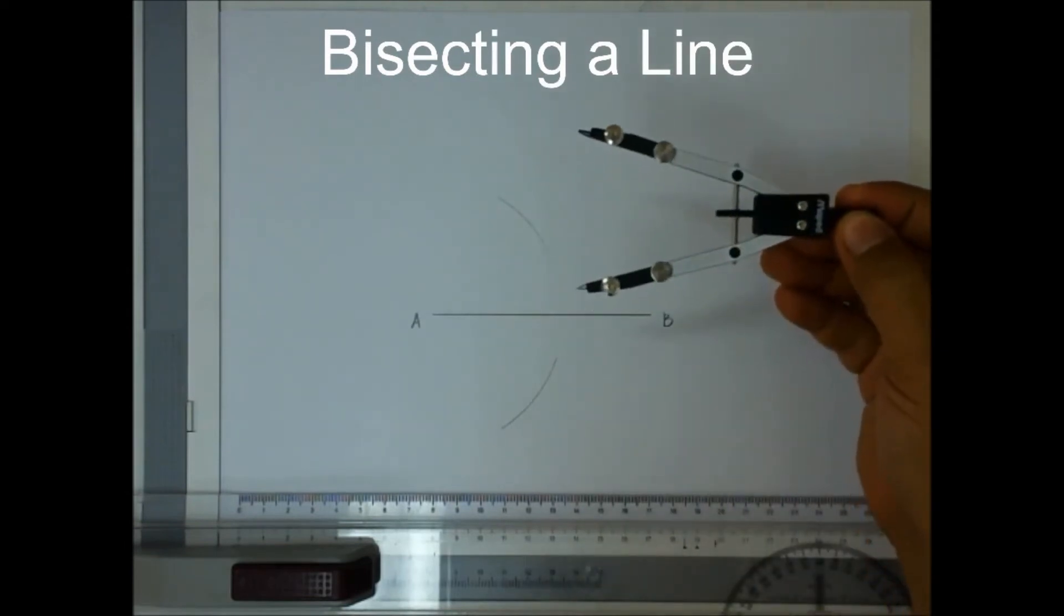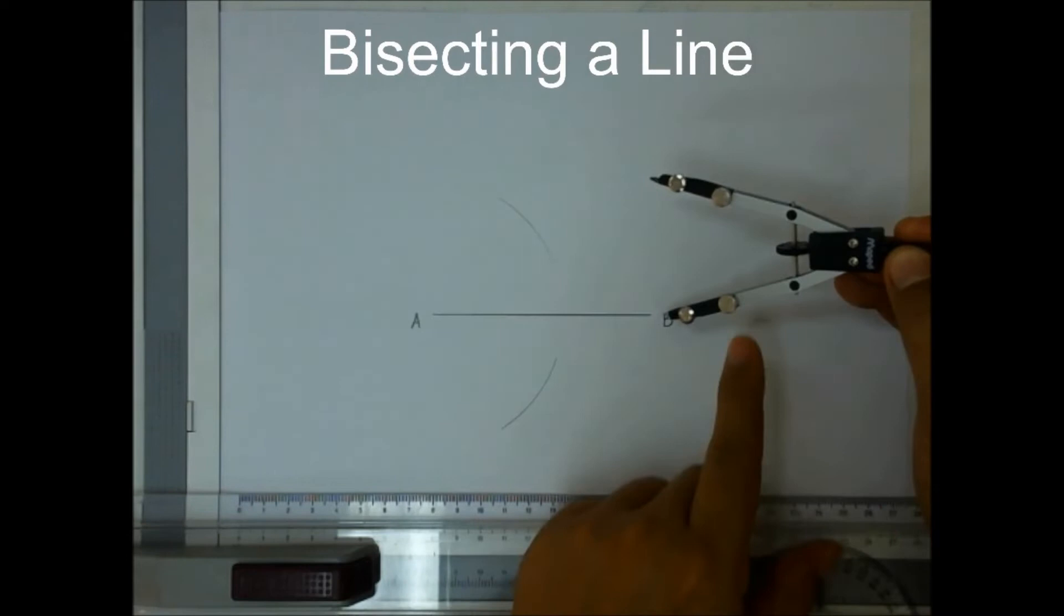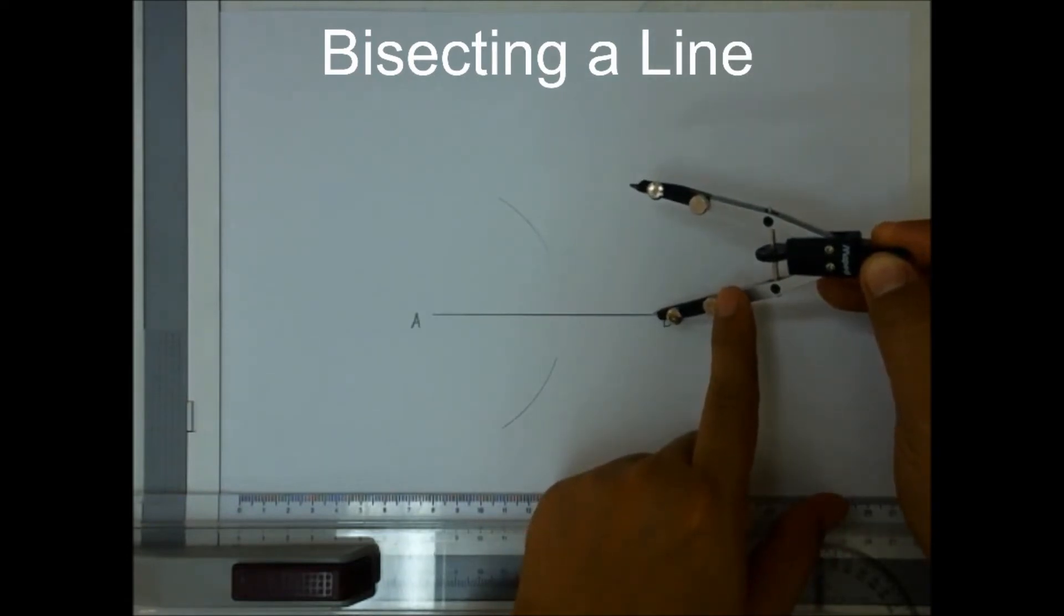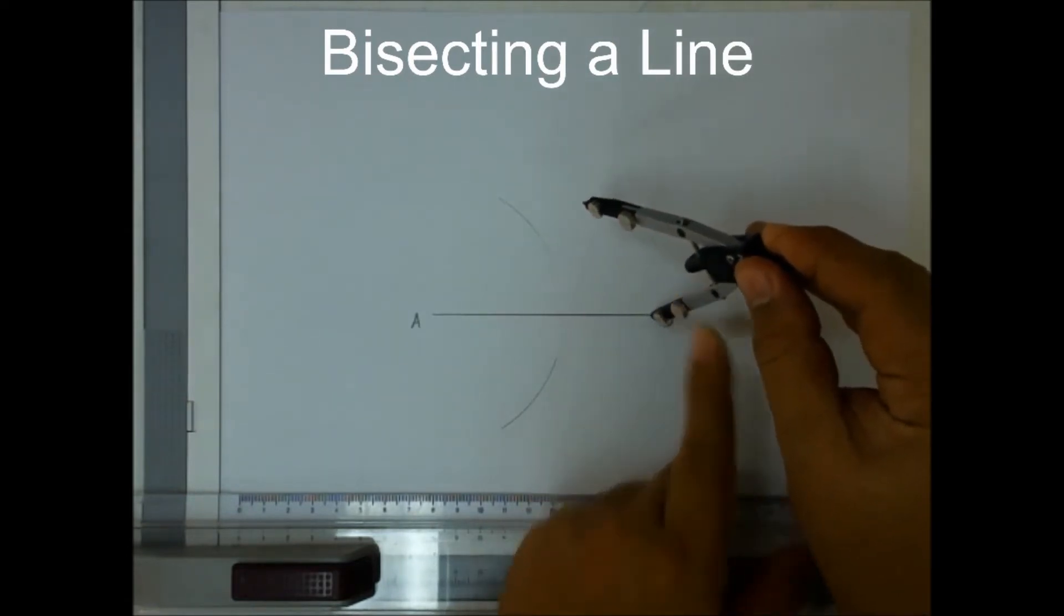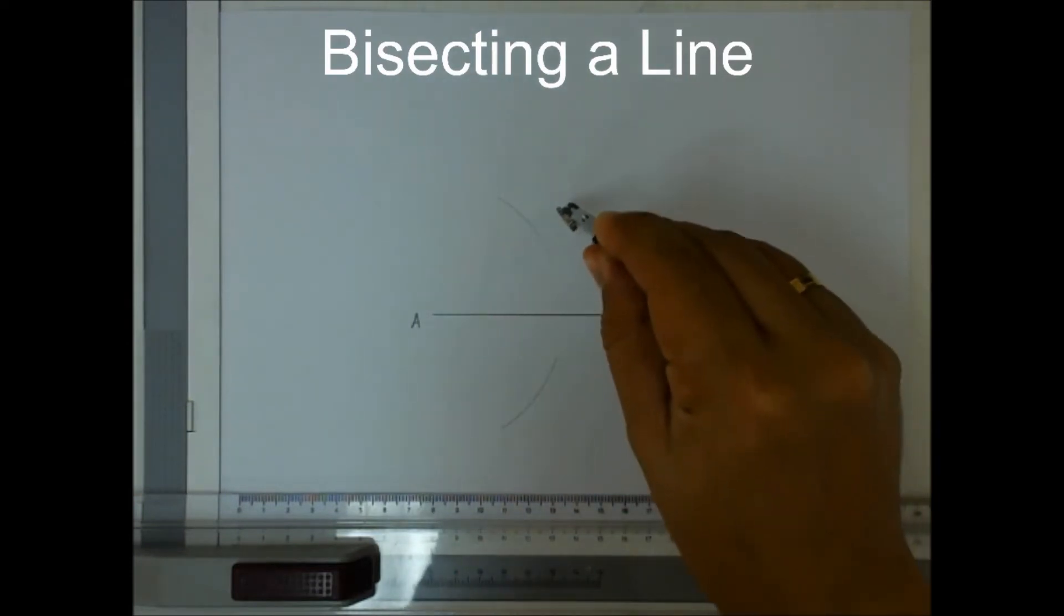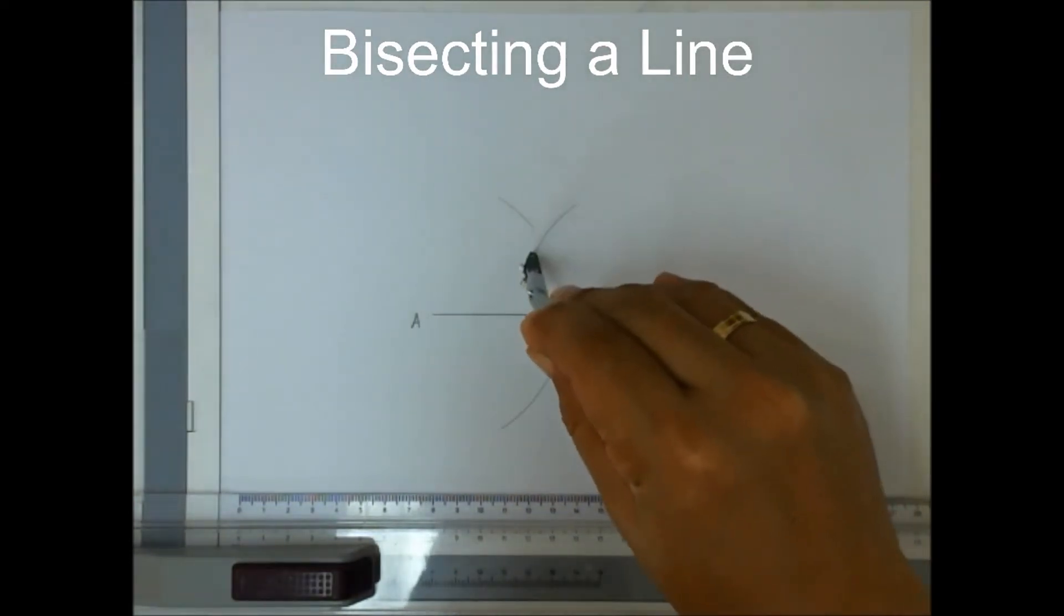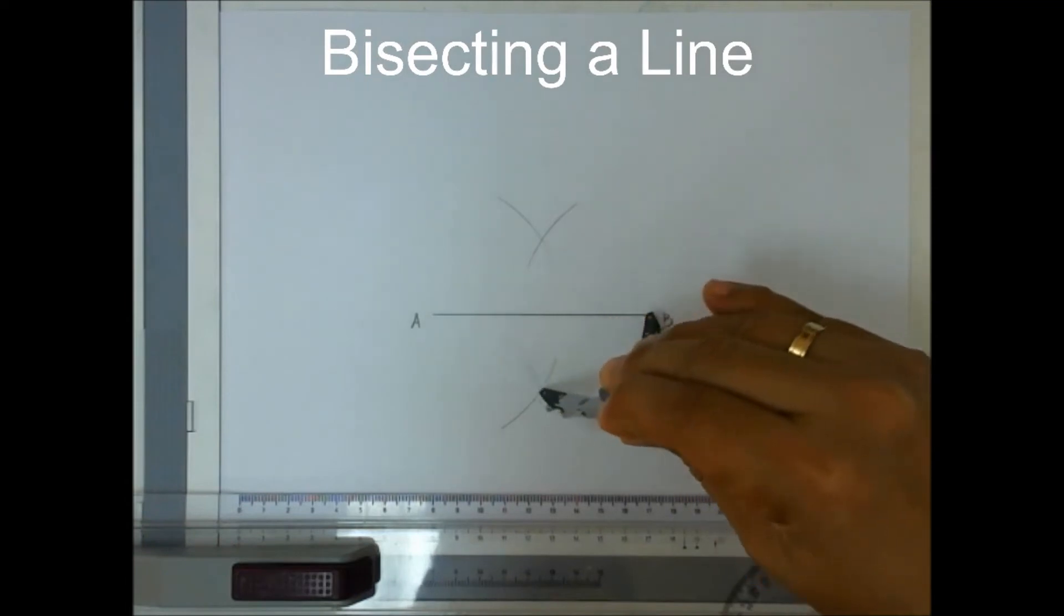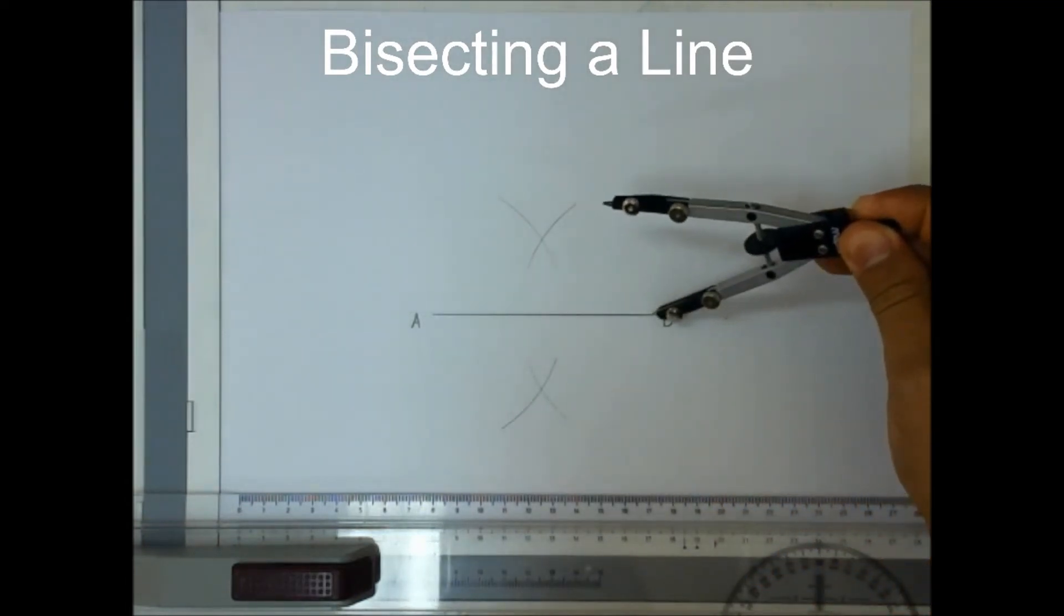Now without changing the setting of your compass, point the needle pointer of your compass at point B. And then make another arc on top and below your line AB.